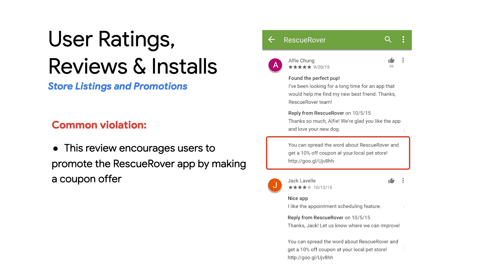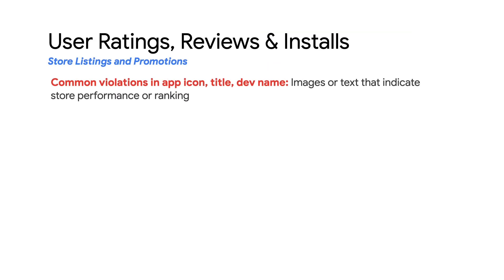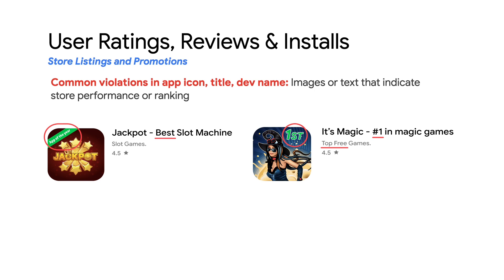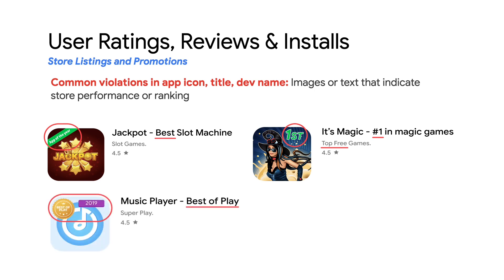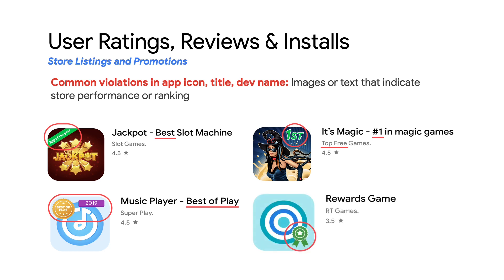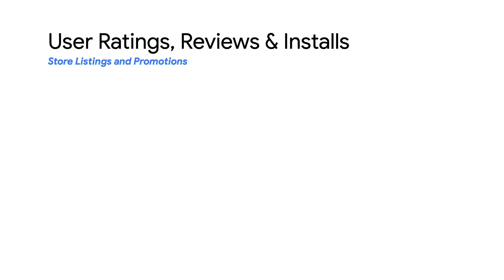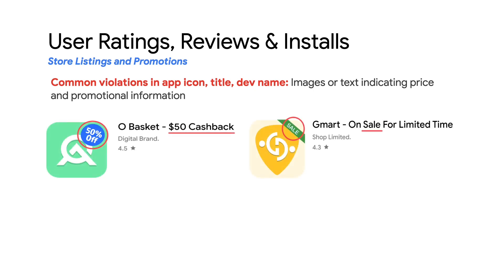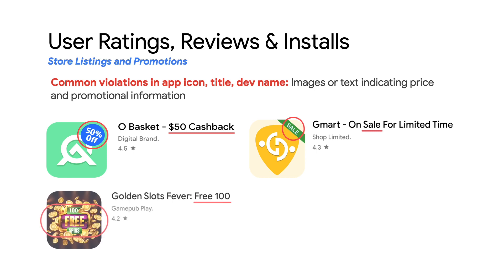Please note that this is not allowed on Google Play. Here are some more examples of common violations where apps use prohibited images or text indicating store performance or ranking — such as 'App of the Year' in the app icon, 'Best Slot Machine' in the app title, '#1 in Magic Games' and 'Top Free Games' in the developer name, 'Best of Play' in both icons and app title, and an award symbol in the app icon. Another type of common violation is usage of images or text indicating price and promotional information in the app icon, title, or developer name — such as '50% off,' '$50 cashback,' 'sale,' 'on sale for limited time,' '100 free spins,' or 'free 100.'